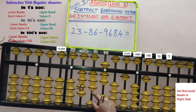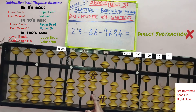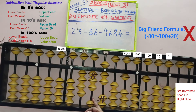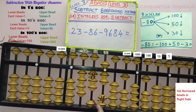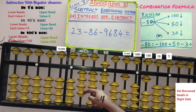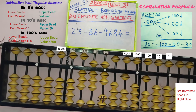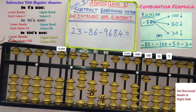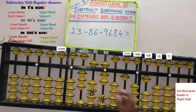Next, remove 8 beads from the 10's row. Only 3 beads are available, so we cannot remove 8 directly. Big friend is also not possible because 8's big friend is 2, and we need to add 2 but have only 1 bead. Hence apply the combination formula for subtracting 8: 100 downward, 50 downward — 5 plus 3 equals 8 — so move the 3 beads downward. 80 beads are removed.